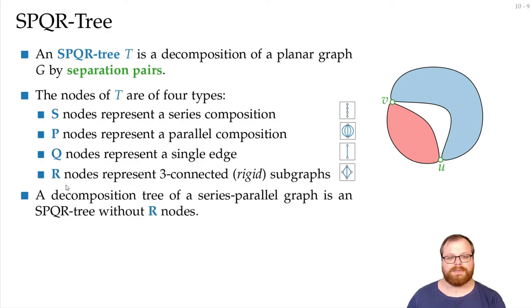If we don't have R nodes, then we automatically have a series parallel graph. Because then, we only have SP and Q nodes, we get an SPQ tree that gives us a series parallel decomposition.